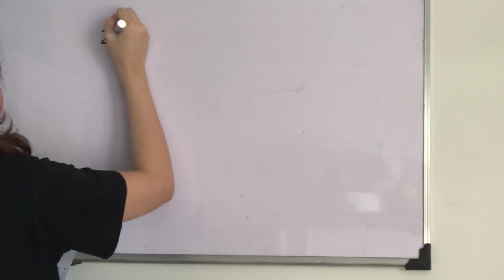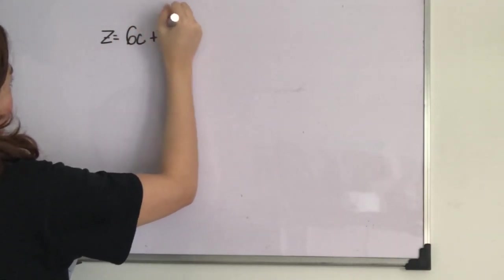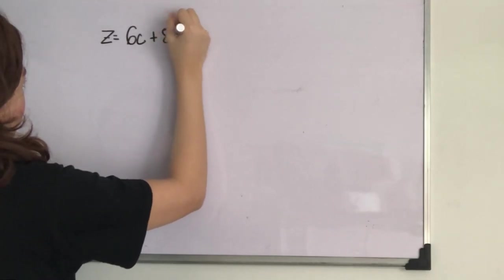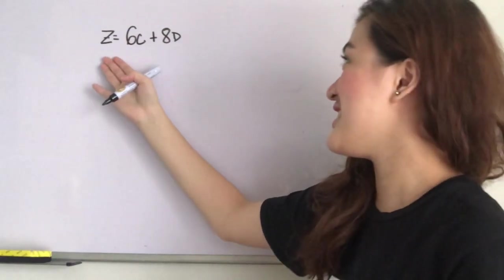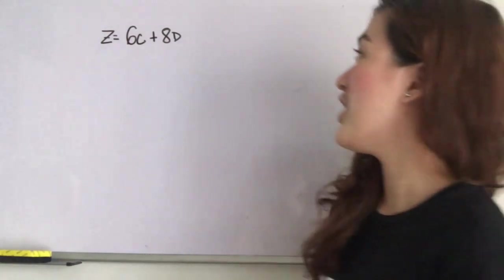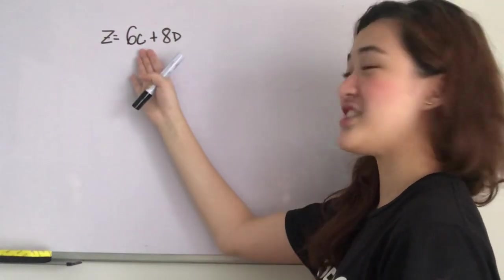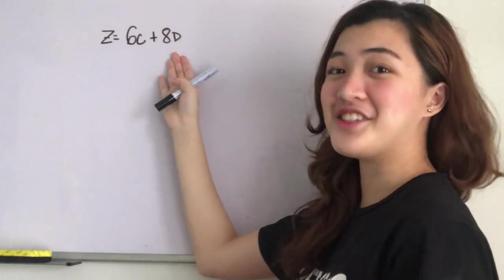So we will start with the objective function. This is the objective function: Z equals 6C plus 8D, considering each C earns 6 and each D earns 8.